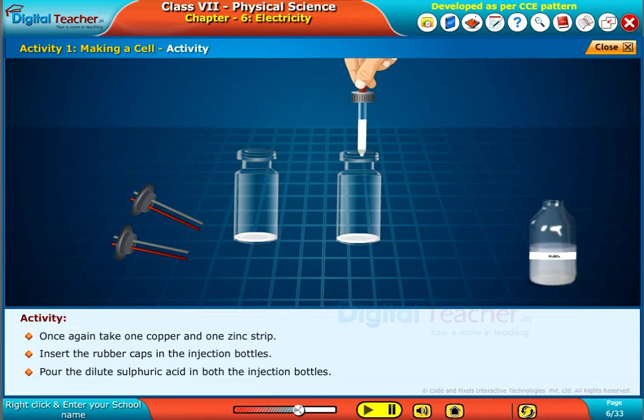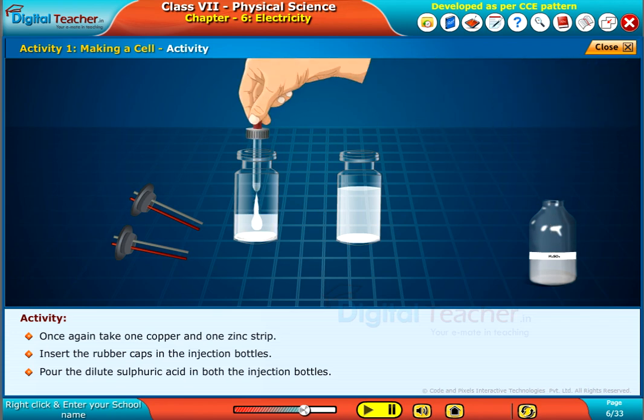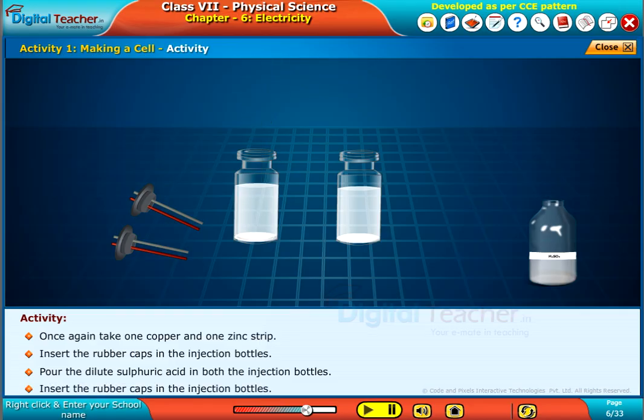Pour the dilute sulfuric acid in both the injection bottles. Insert the rubber caps in the injection bottles.